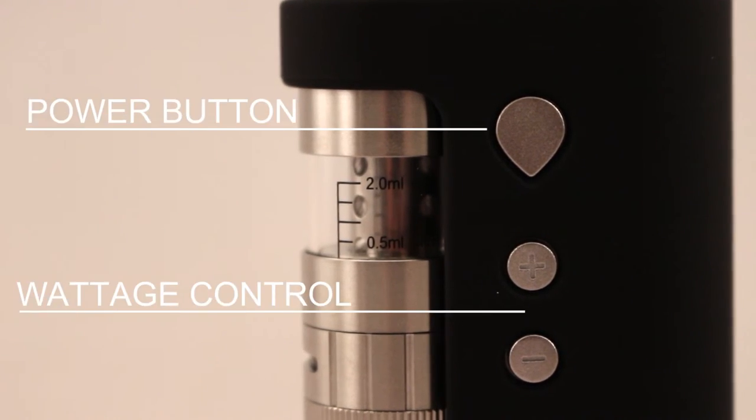The two small buttons on the side control the wattage, while the big button above them is to be held down while smoking.